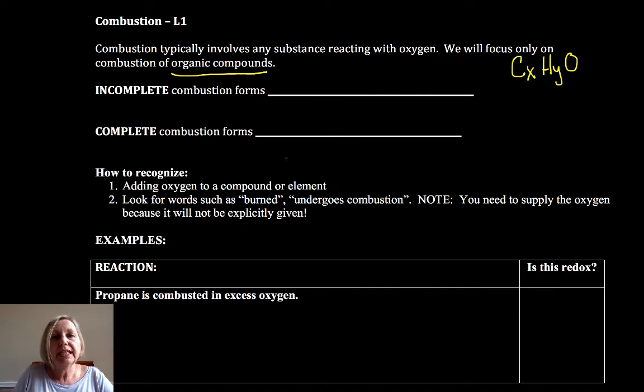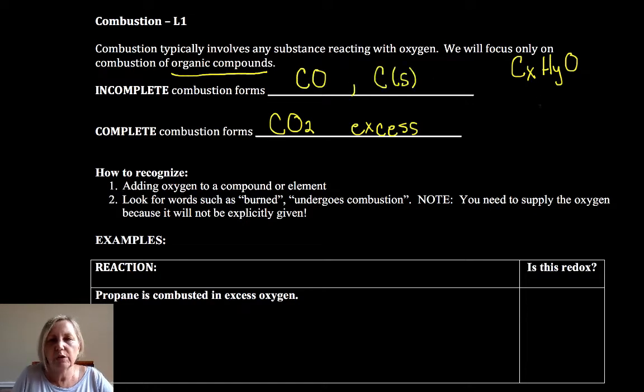Now, complete combustion forms carbon dioxide. So whenever you have excess oxygen around, you'll tend to form carbon dioxide. Incomplete combustion forms carbon monoxide or maybe some carbon solid, some soot, graphite.